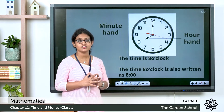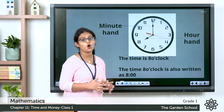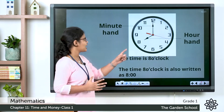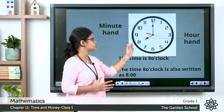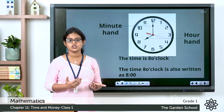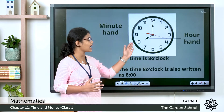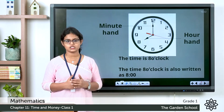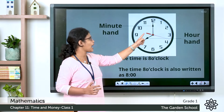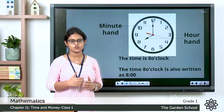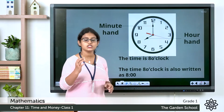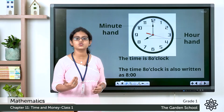If you closely observe this picture, you can see this long hand — we call it the minute hand. And you can see this short hand — this short hand is the hour hand, and this hour hand tells us what hour it is. The exact hour happens when the minute hand is at 12 and the hour hand points to a number.